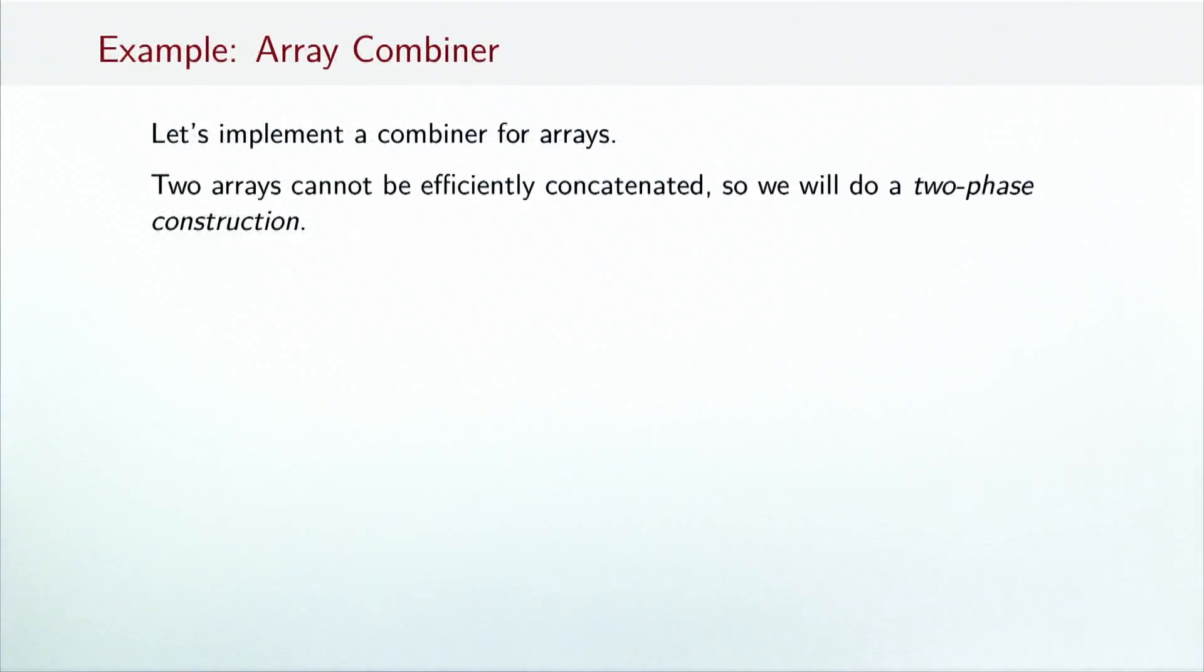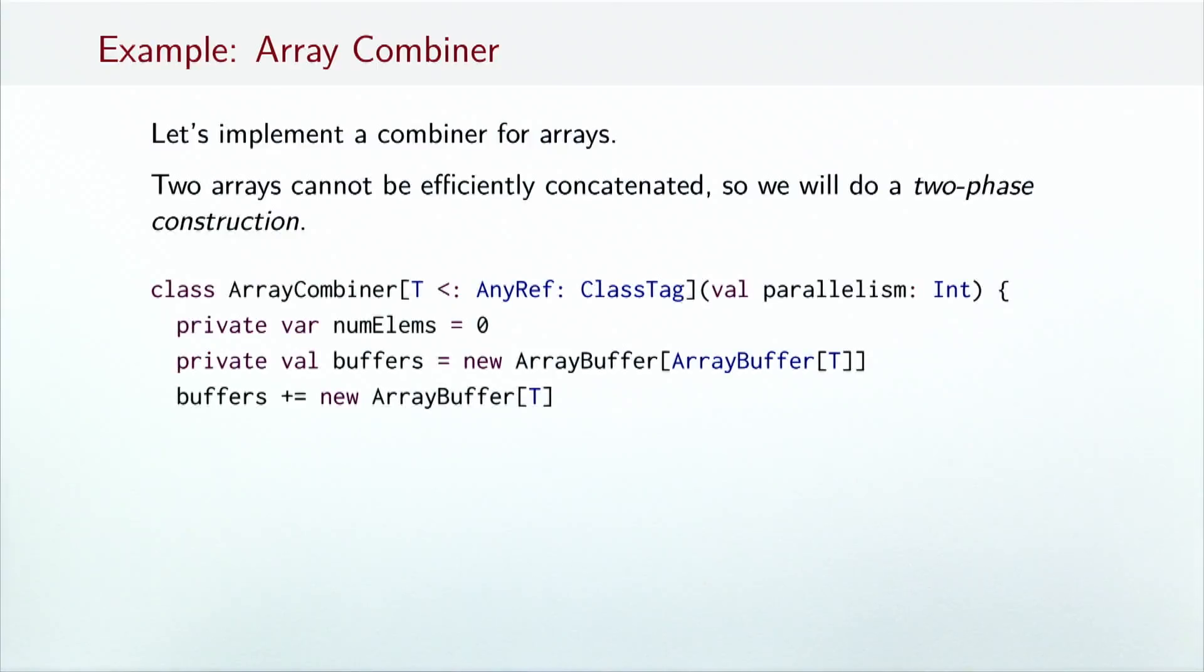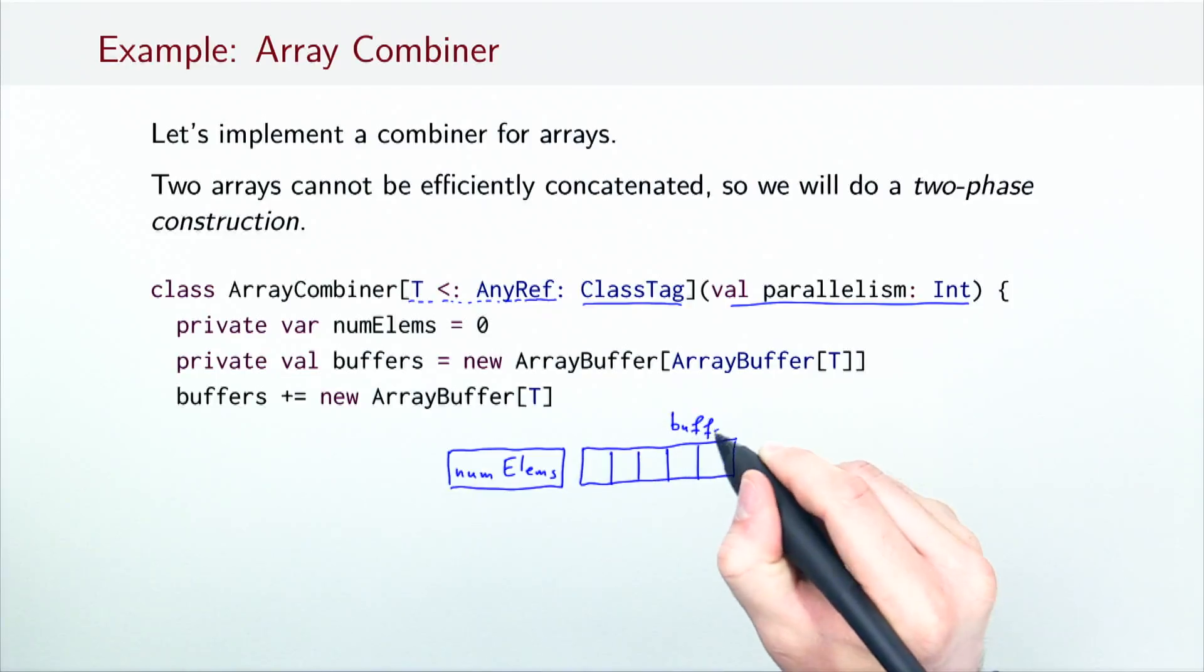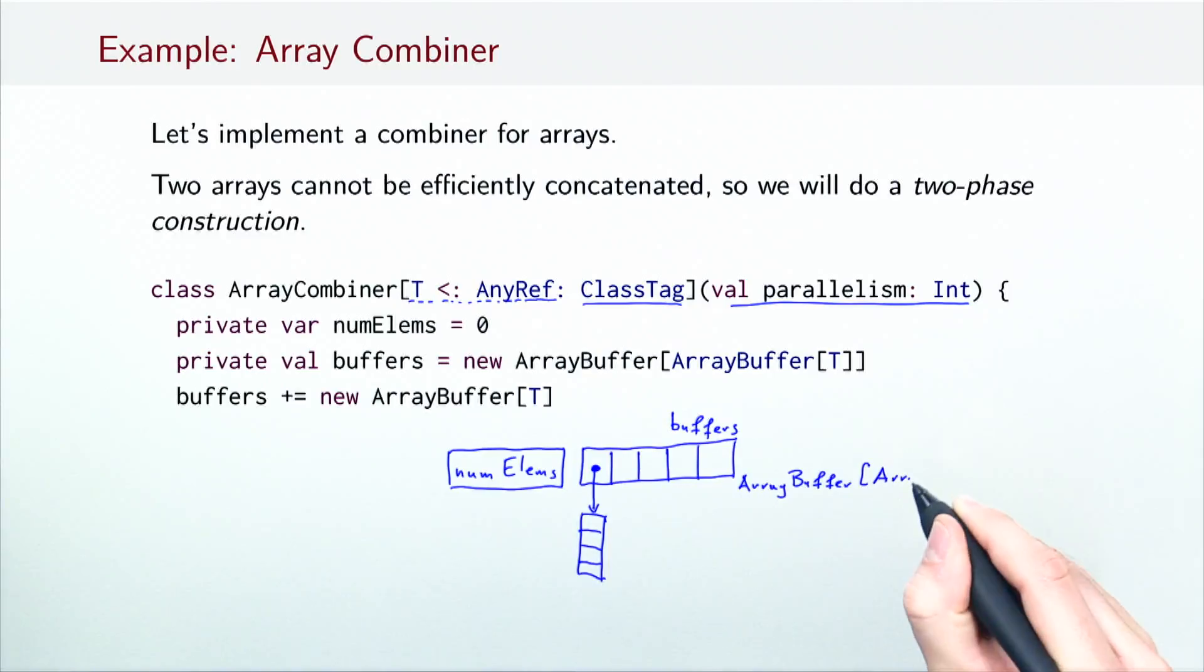Having seen the high-level overview of how the two-phase parallel construction works, we now turn to a concrete example, a two-phase array combiner. To keep things simple, we will limit our array combiner class to reference objects, expressed with the type bound on the type parameter t. We also add the class tag context bound to be able to instantiate the resulting array and the parallelism level argument. Internally, the array combiner keeps a field numElems to store the number of elements in the combiner and the nested array buffer used to store the elements.